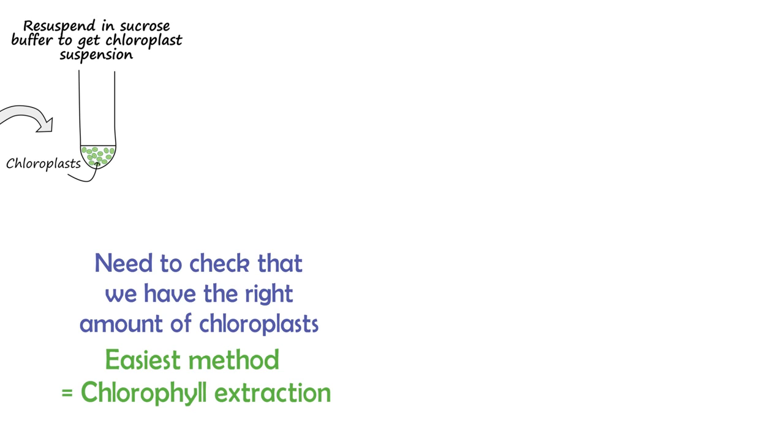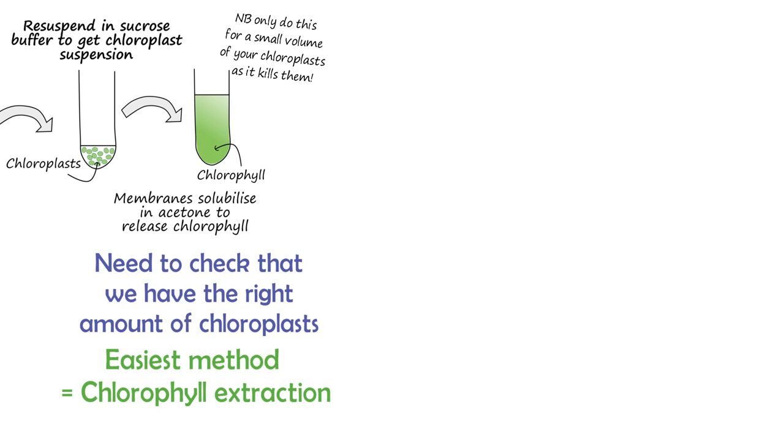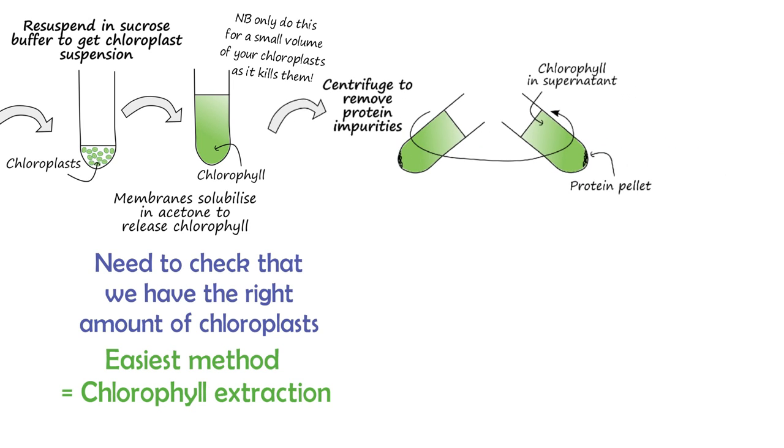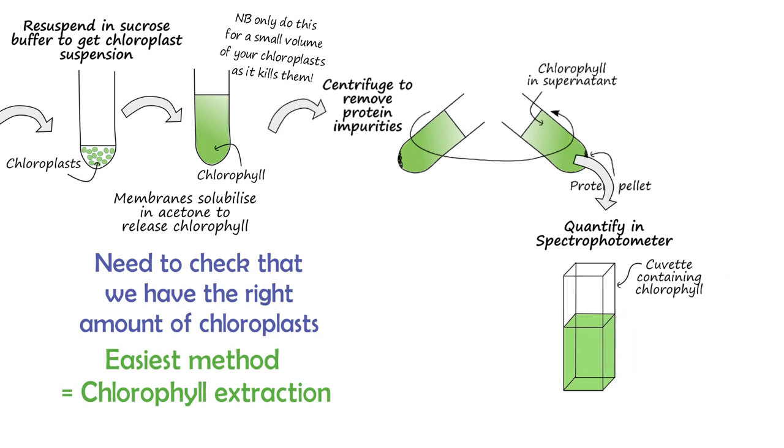Chlorophyll is contained within proteins inside the thylakoid membrane, so it's much more soluble in organic solvents than in water. To extract the chlorophyll, we'll add a small volume of the chloroplasts to an 80% acetone solution. This will solubilize the membranes and release the chlorophyll. We'll then do a quick spin in the centrifuge to remove any protein impurities, and then measure the concentration of the chlorophyll in a spectrophotometer.